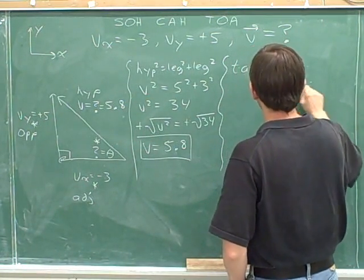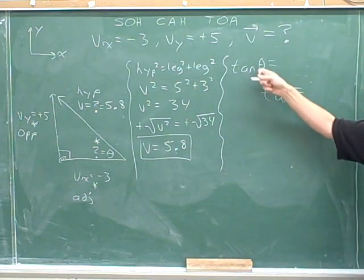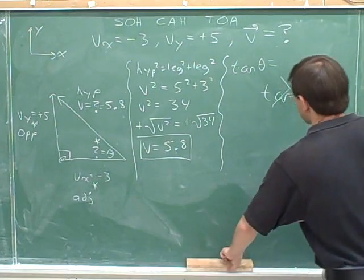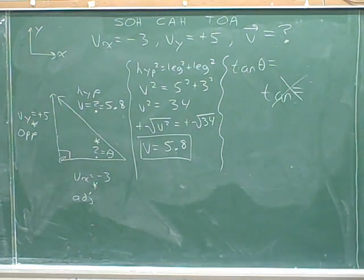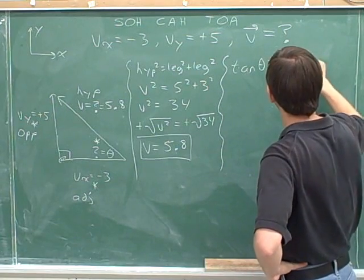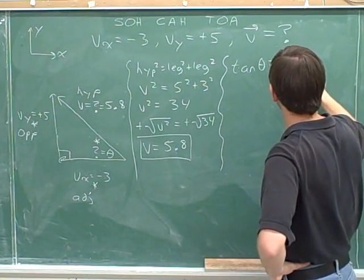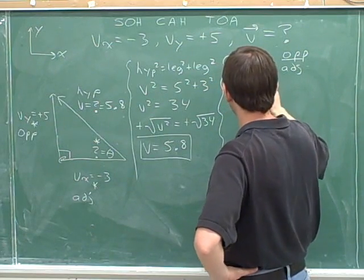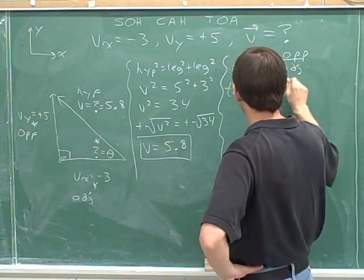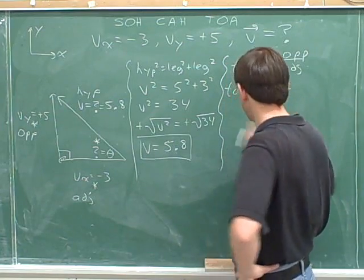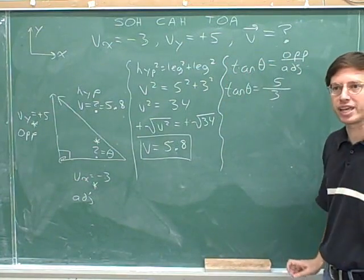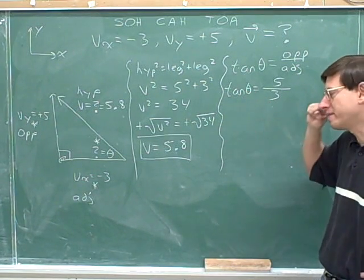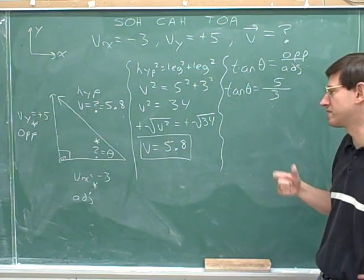Remember, you never just write this. You can't just write tangent equals. You have to say the tangent of some particular angle. Opposite over adjacent. The opposite side has a length of 5, and the adjacent side has a length of 3. Notice that I'm not plugging in the signs, because I'm dealing with trig. Trigonometry is about lengths.